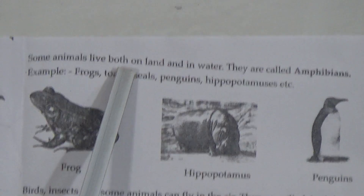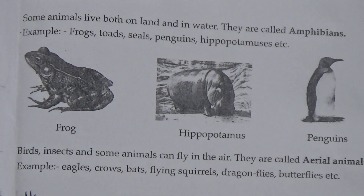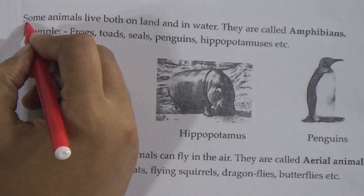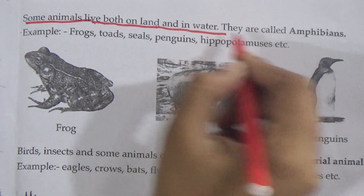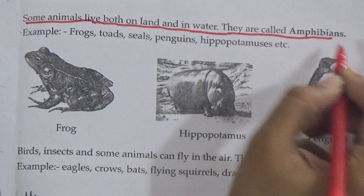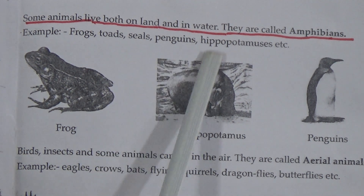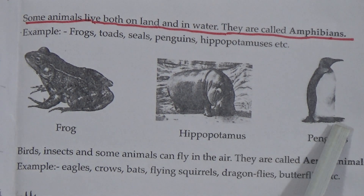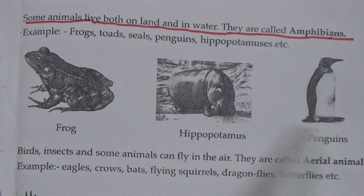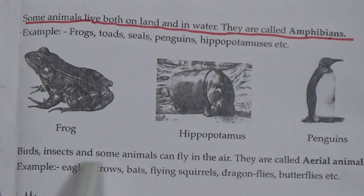Some animals live both on land and in water — they are called amphibians. Animals that live both on land and in water are called amphibians. Examples: frogs, toads, seals, penguins, hippopotamus, etc. This is the picture of frog, hippopotamus, and penguins — all are amphibians.